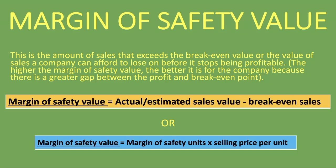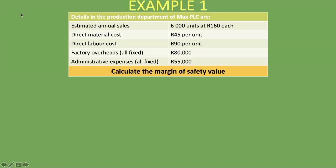Now let's go through an example in calculating the margin of safety value. We are given the details in the production department of Max PLC: estimated annual sales of 6,000 units at 160 rand each. We are also given direct labor, direct material, factory overheads which are all fixed, and administrative expenses which are also all fixed. We are asked to calculate the margin of safety value.